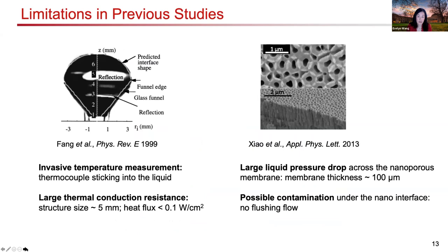Experimentally, this has been extremely difficult because probing close to the interface — for example, inserting a thermocouple into the liquid — can be invasive and affect the measurement. Additionally, structures have typically been relatively large, on the order of about five millimeters, creating large thermal conduction resistance that limits measurable heat fluxes. Nanoporous membrane films also have relatively large thicknesses leading to large pressure drops and susceptibility to contamination, which also affects measurements. So probing this kinetically limited regime is non-trivial.